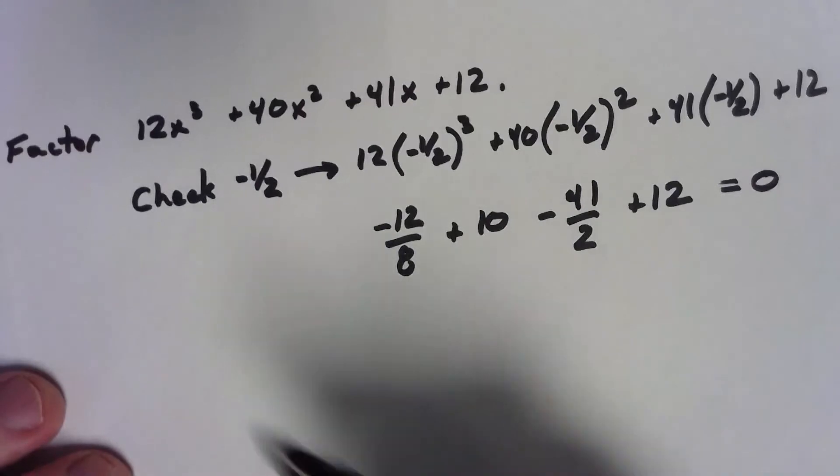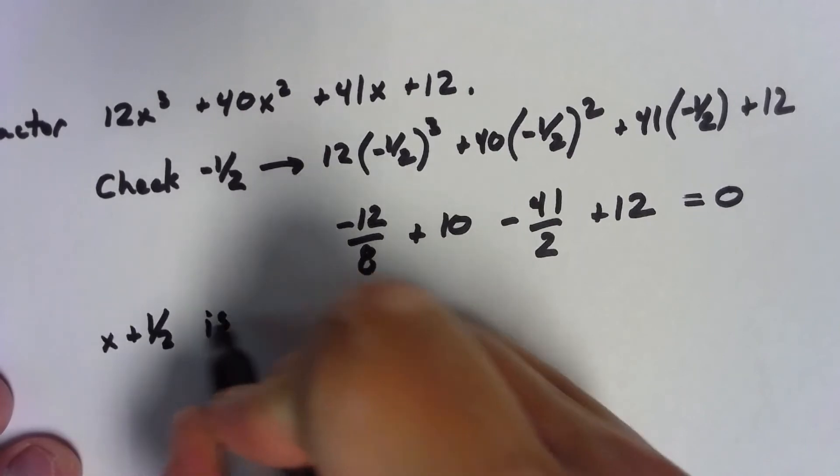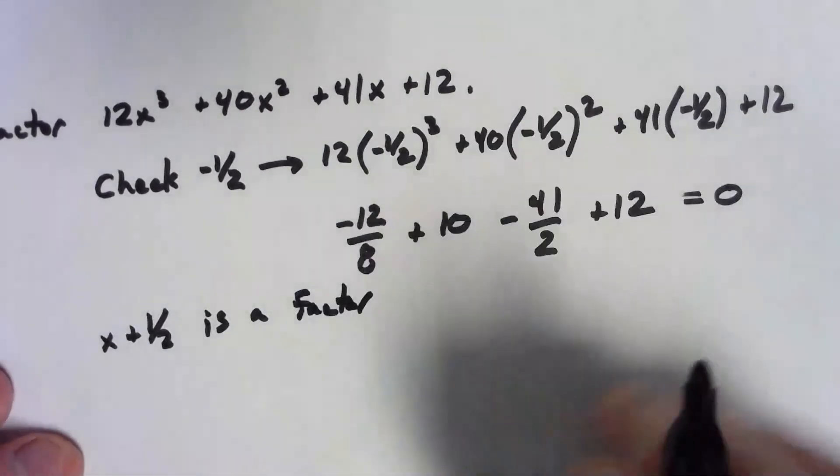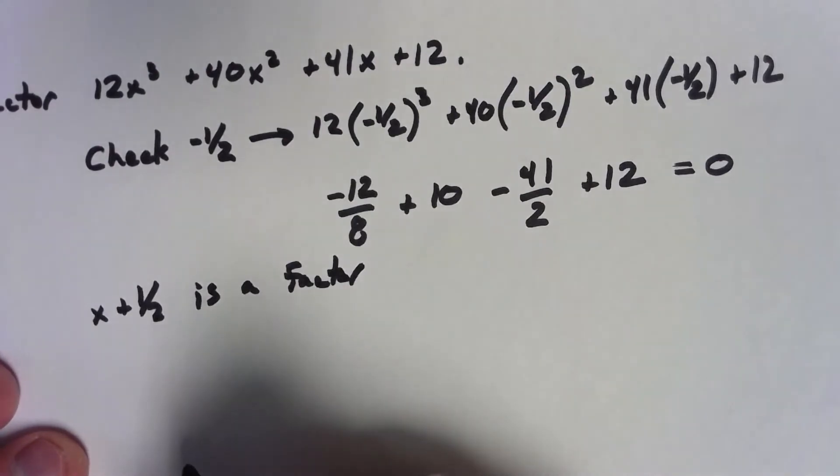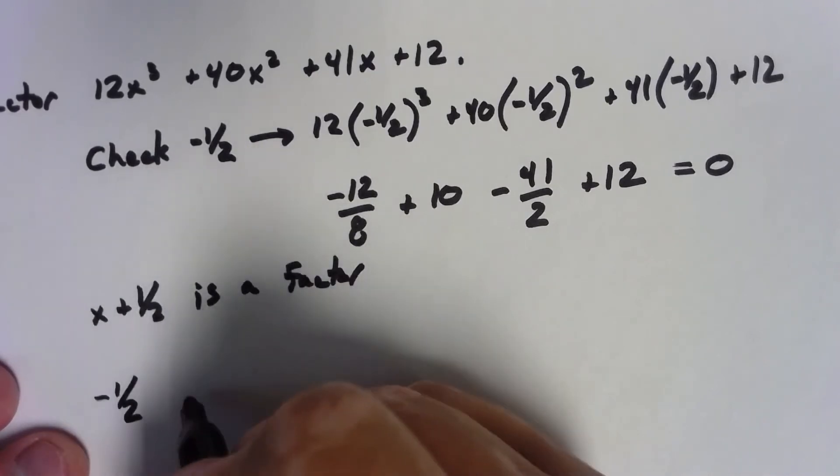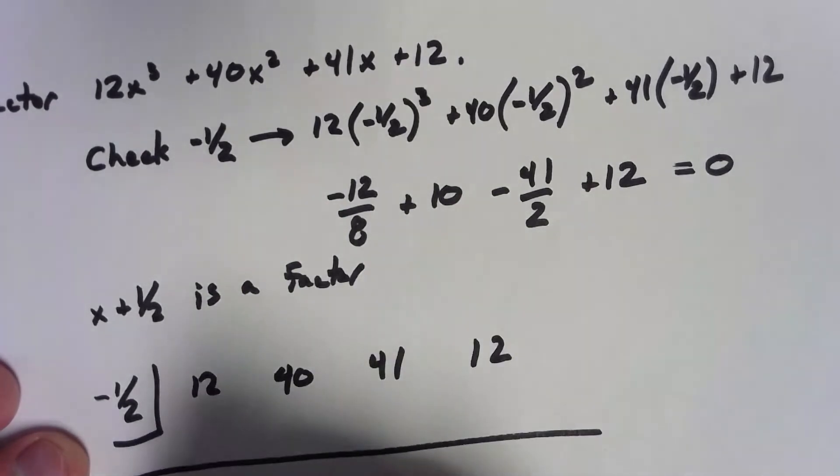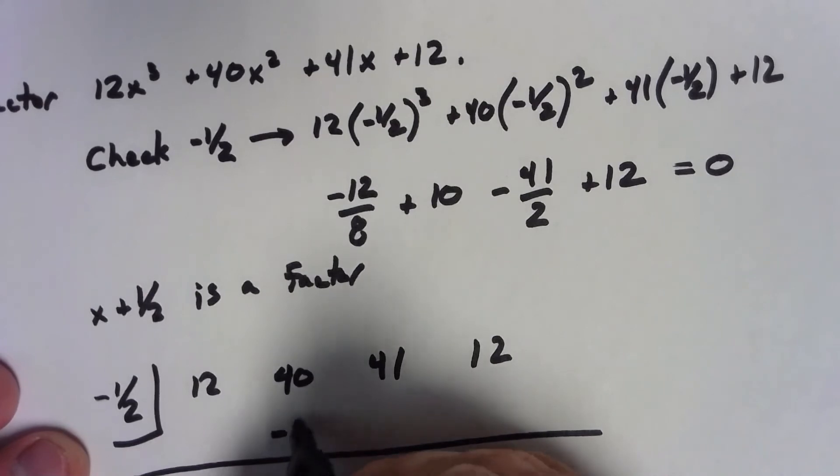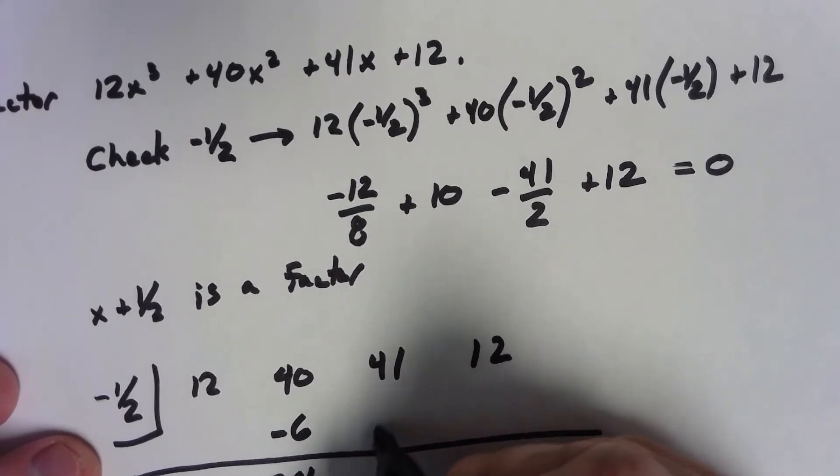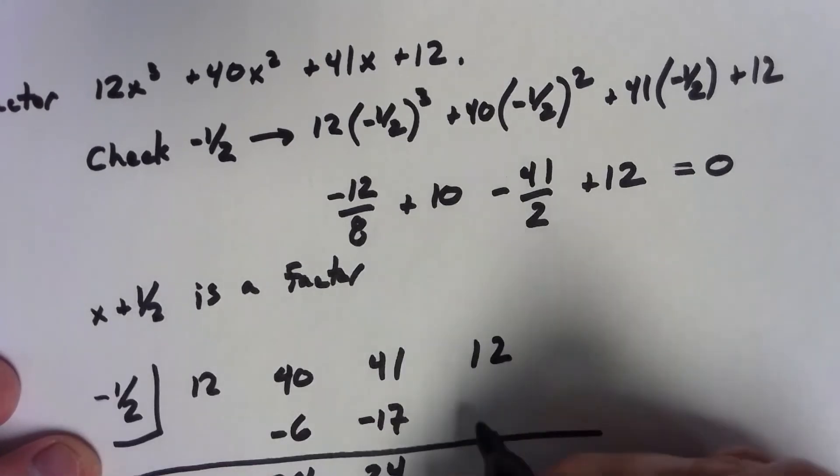So, that means since negative one-half was a zero, x plus one-half is a factor. And so, that means that we've got... Again, we can do a synthetic division. Put a negative one-half in the box compared to 12, 40, 41, 12. Bring that down. Times a negative one-half would be negative six. Gives me 34. Times a negative one-half gives us negative 17. Gives me 24. Gives me 24. Times a negative one-half is negative 12. Gives me a zero.